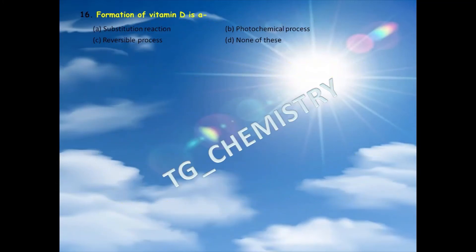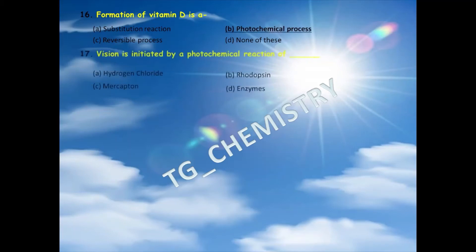Sixteenth question: formation of vitamin D is — a substitution reaction, a photochemical process, a reversible process, or none of these? The answer is option B — photochemical process. Seventeenth question: vision is initiated by a photochemical reaction of — hydrogen chloride, rhodopsin, mercaptone, or enzymes? The correct answer is rhodopsin, option B.